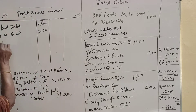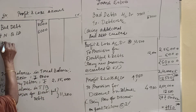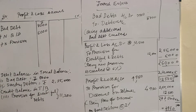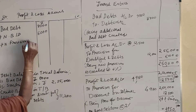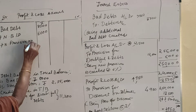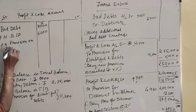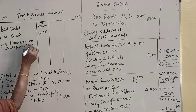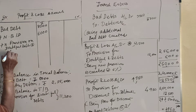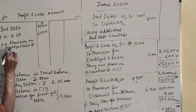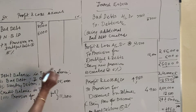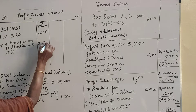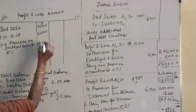Plus new provision. New provision created at 5 percentage — new provision on doubtful debts at 5 percentage. How much we got? We have calculated and we got that amount: 12,500. Now, let us total all these things. The total comes to 25,500.